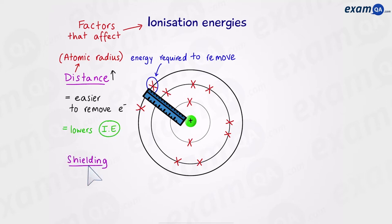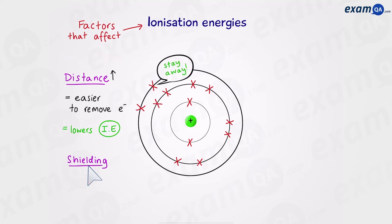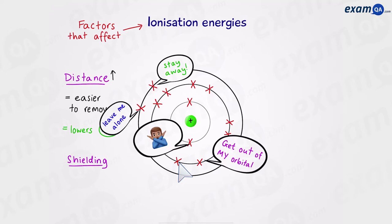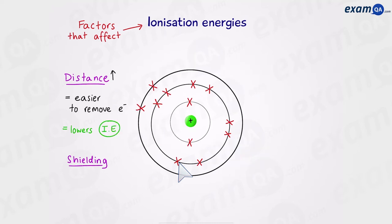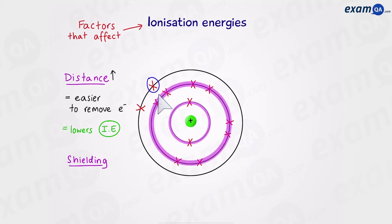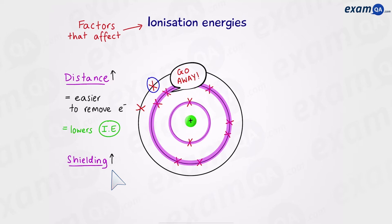The second factor is called shielding. Electrons repel each other because they're all negatively charged and want to get as far away from each other as possible. If we're trying to remove the outermost electron, it's attracted to the nucleus, but between this electron and the nucleus we have layer upon layer of other electrons. All these shells in between are pushing the electron away from the nucleus. So if there's more shielding — more shells between the nucleus and the outermost electron — it will be easier to remove that electron, and this will lower the ionization energy.